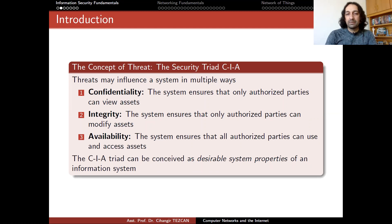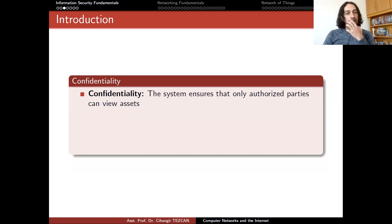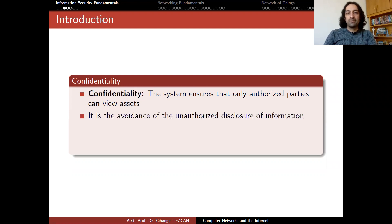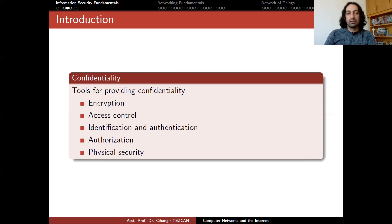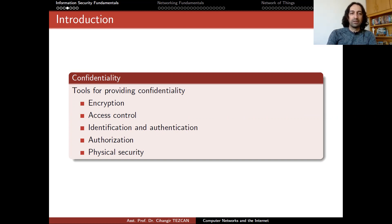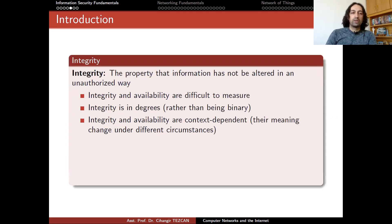The CIA triad can be considered as desirable system properties of an information system. Confidentiality is the avoidance of unauthorized disclosure of information. It involves the protection of data, providing access for those who are allowed to see it while disallowing others from learning anything about its contents. This is not only about encryption, but also about authentication. Tools for providing confidentiality include encryption, access control, identification and authentication, authorization, and physical security.